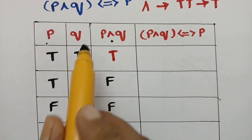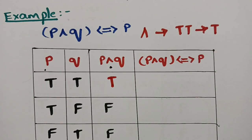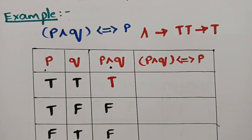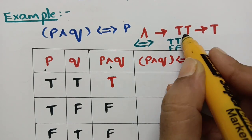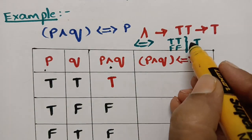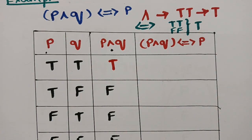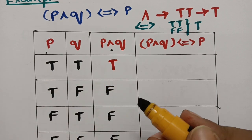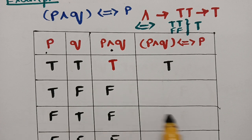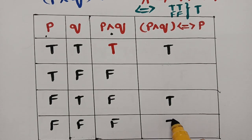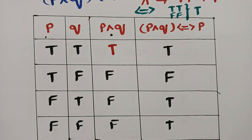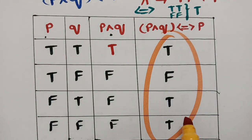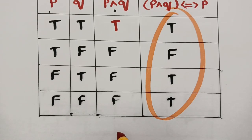Now compare (p ∧ q) and p using biconditional (if and only if). For biconditional, remember: double-true or double-false gives true. Comparing (true, false, false, false) and (true, true, false, false): true-true → T; false-true → F; false-false → T; false-false → T. So the result is true, false, true, true — a combination of true and false. This is neither a tautology nor a contradiction, therefore this is a contingency.